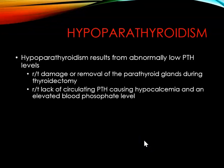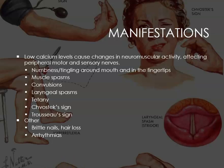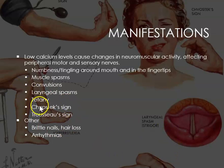Hypoparathyroidism results from abnormally low PTH levels. This can be related to damage or removal of the parathyroid glands during a thyroidectomy, or a lack of circulating PTH causing hypocalcemia and elevated blood phosphate levels. Low calcium levels cause changes in neuromuscular activity. Think about the signs of tetany reviewed in the fluid and electrolytes chapter — Chvostek's sign and Trousseau's sign.